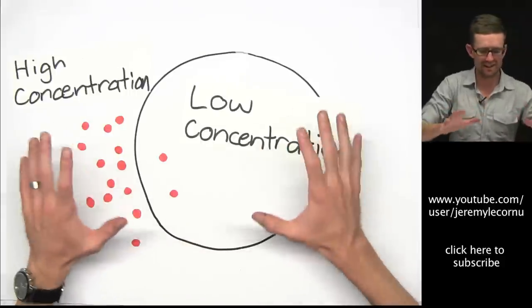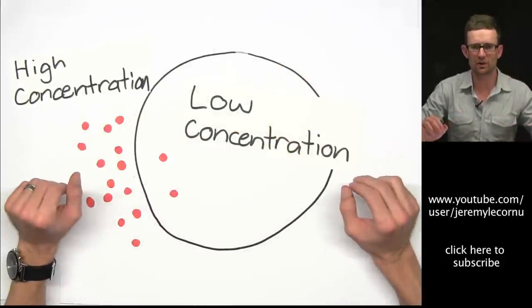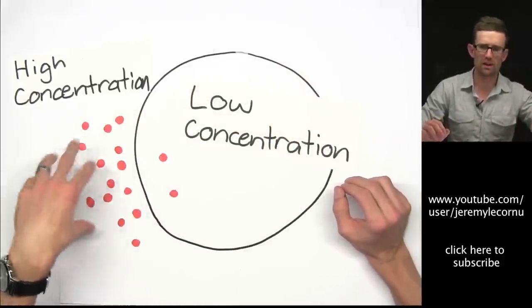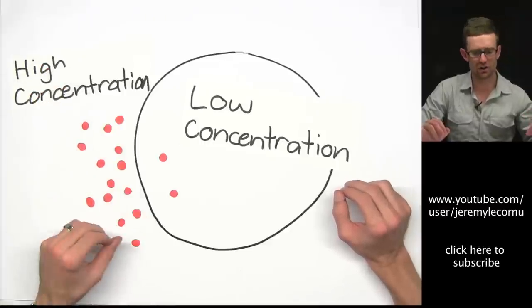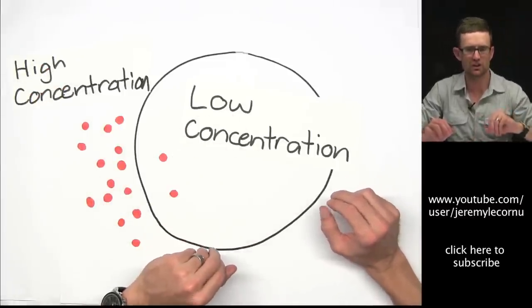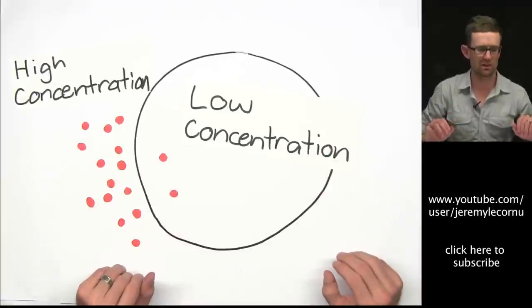Now it is as simple as the scenario that we looked at in the beaker. So particles will move from where there are lots of them, a higher concentration, to an area where there is less, a low concentration, until equilibrium is reached.